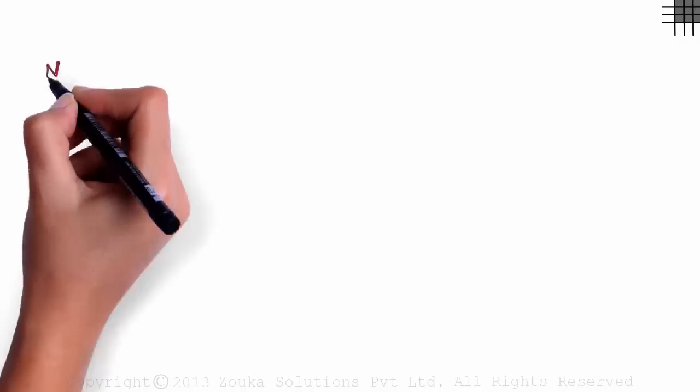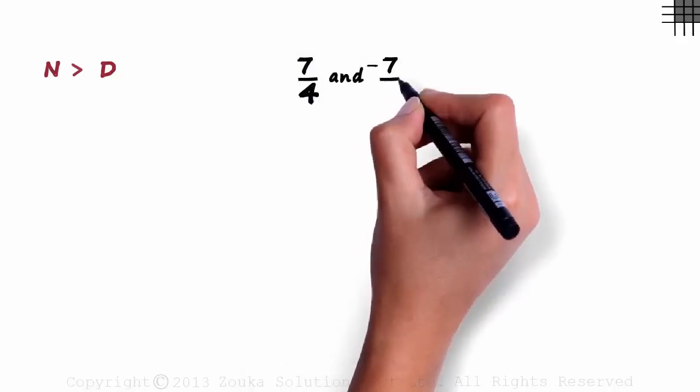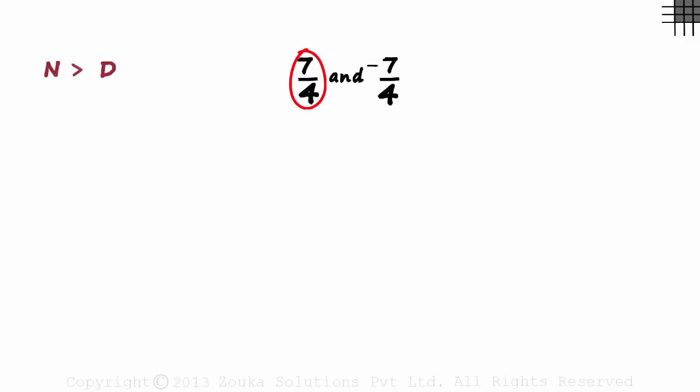In this video we will try to plot rational numbers whose numerators are greater than their denominators. Let us plot 7 by 4 and minus 7 by 4. We try to plot 7 by 4 first.